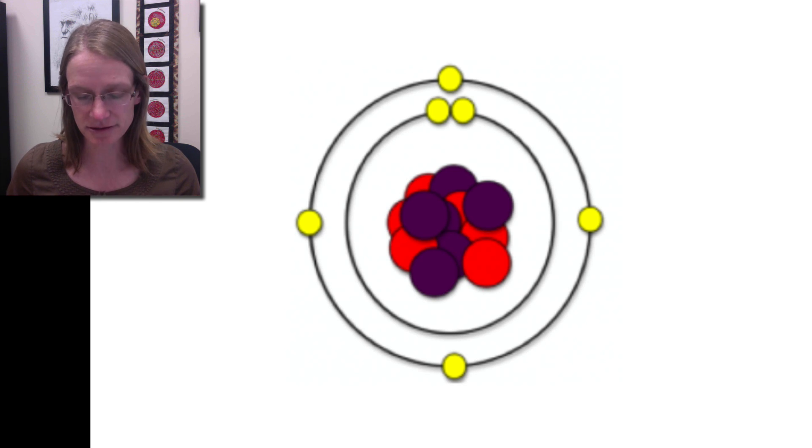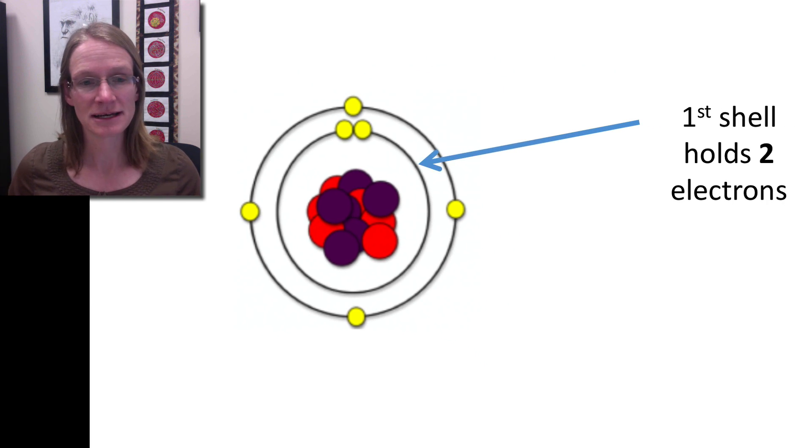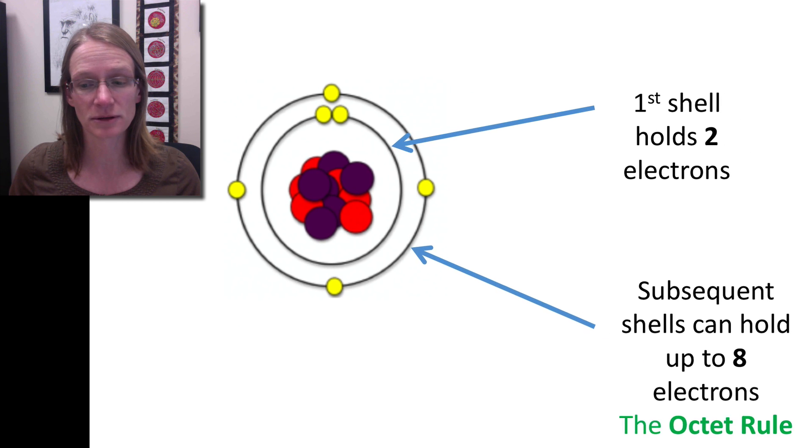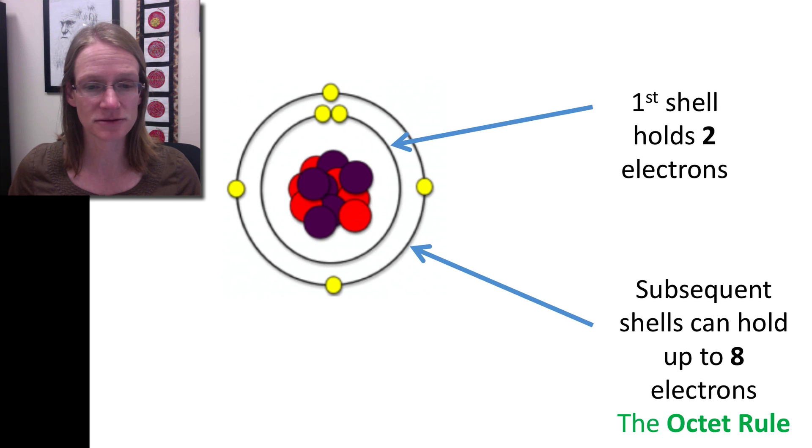It's important for us to understand where the electrons go because there are these energy shells. The innermost shell holds a max of two electrons—that is as many as it can contain. It always has a max of two. Then the other electrons go outside of that, but each shell outside of that internal one can hold a max of eight electrons.